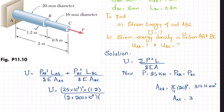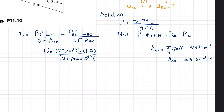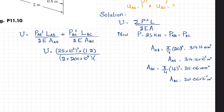In terms of meters, area of AB = 314.16 × 10⁻⁶ m². Similarly, area of BC equals π/4 times diameter of BC squared, where diameter of BC = 16 mm, giving 201.06 mm², or in meters: 201.06 × 10⁻⁶ m². Now we can put area of AB = 314.16 × 10⁻⁶ into the formula.